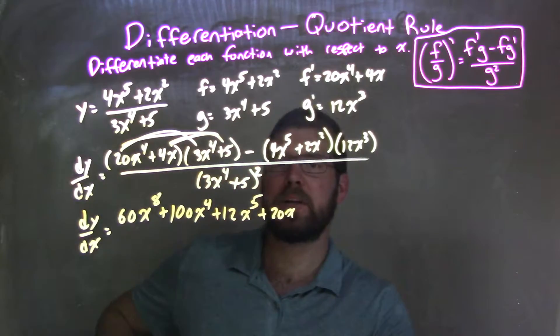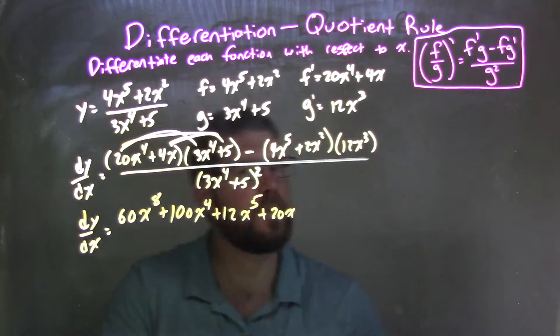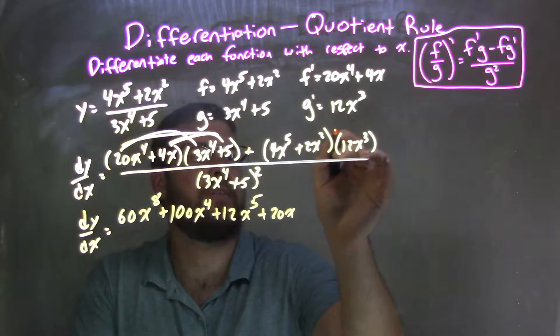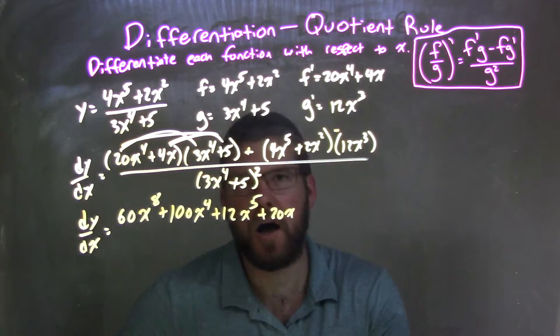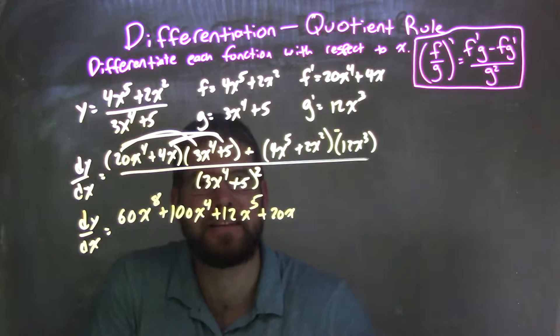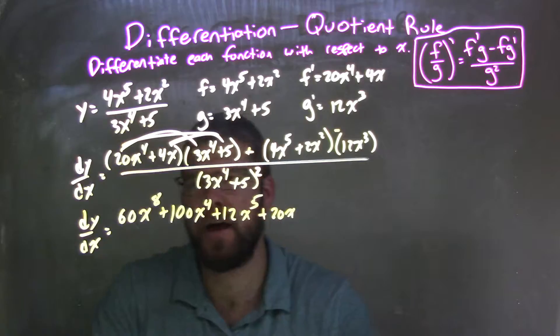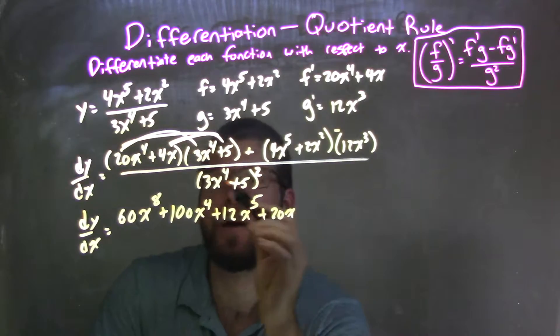And then 4x times 5 is 20x. Now when we subtract here, make sure we distribute the subtraction to all parts there. And sometimes it's easier to kind of see it like this. Make it a plus and make the negative right there by the 12 x to the third. Or you can leave it and distribute it how you may.